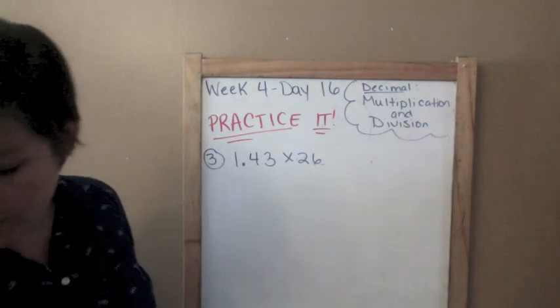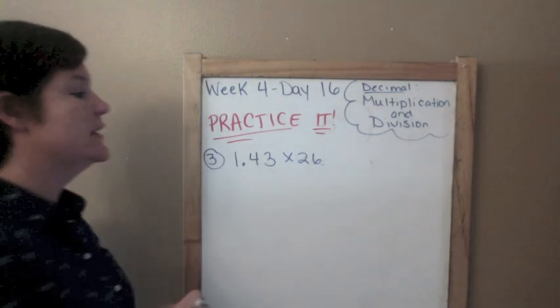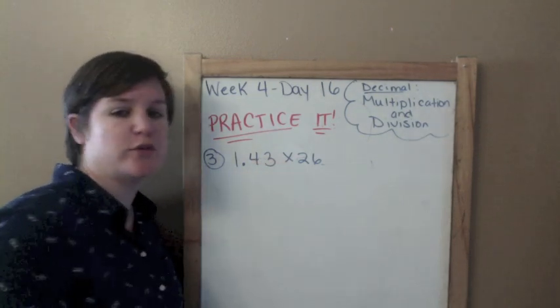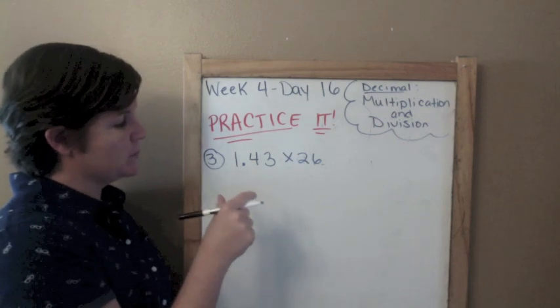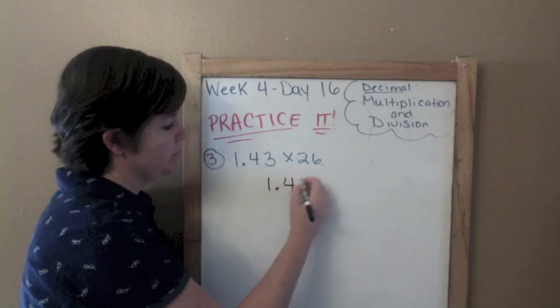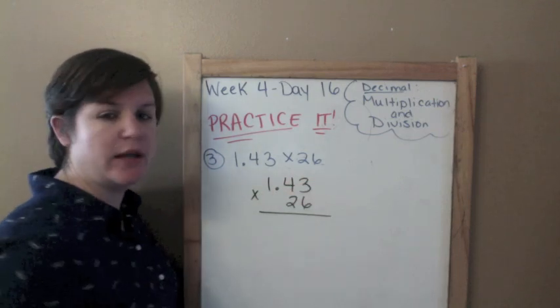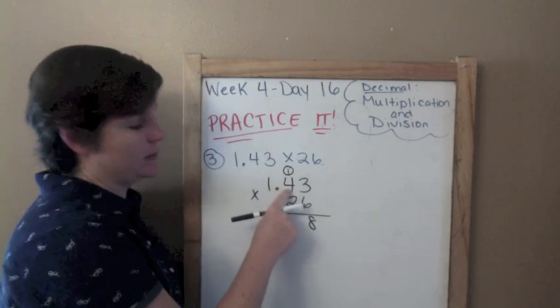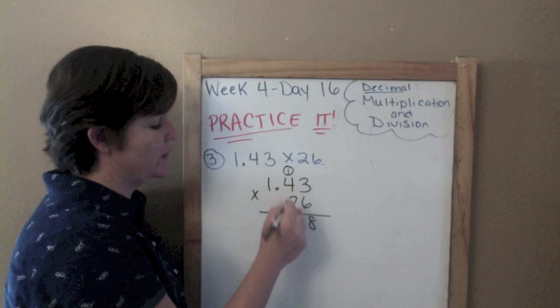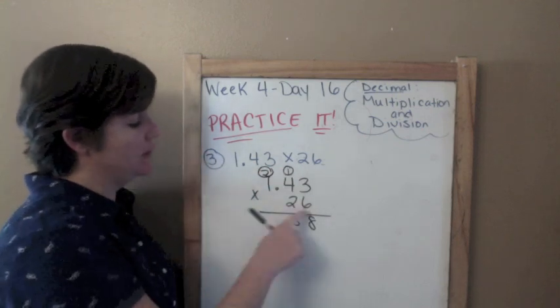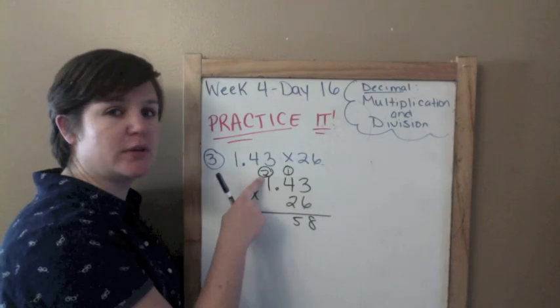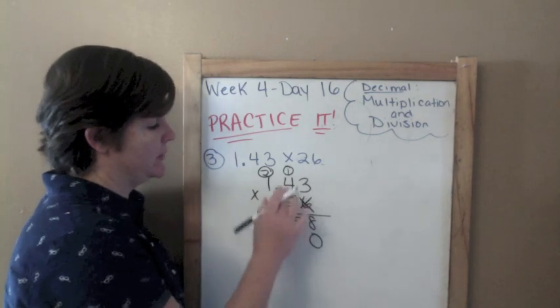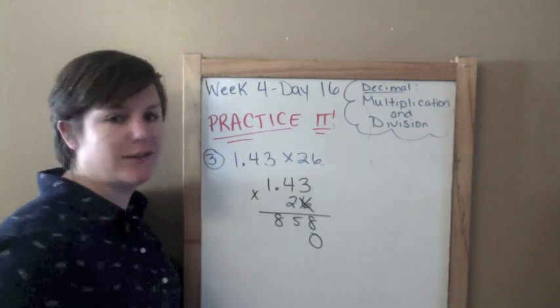1 and 43 hundredths times 26. We are finding the quotient or the product. The product. Because finding the product means we're multiplying. So to set it up, I just set it up like normal. And I multiply. So 6 times 3 is 18. 6 times 4 is 24, plus 1 is 25. 6 times 1 is 6, plus 2 is 8. Alright. Put a 0 there to hold the place. We're done with my 6 and get rid of my regroupies. That's what I like to call them, regroupies.